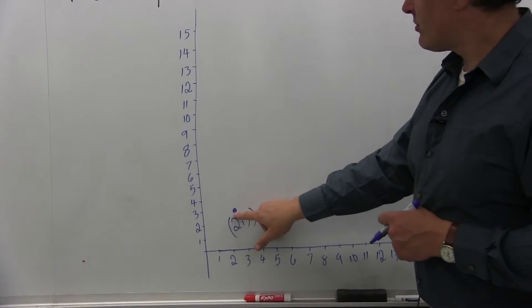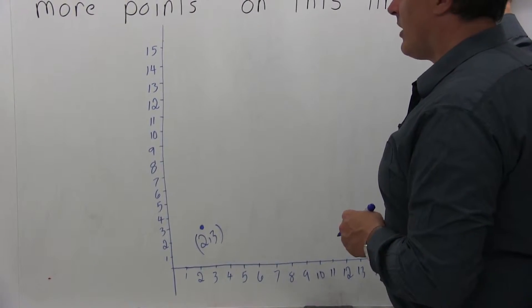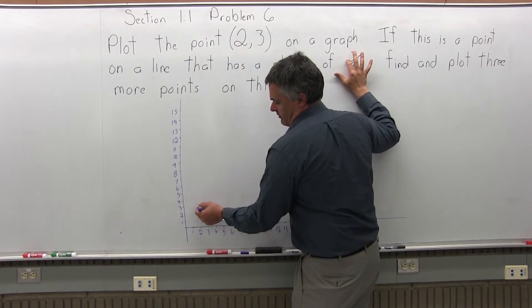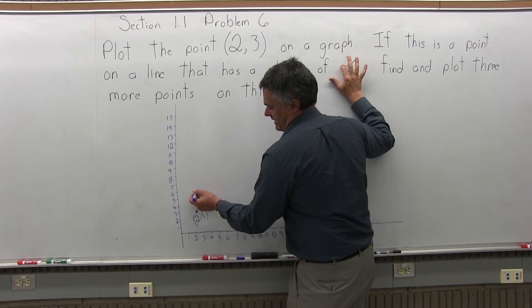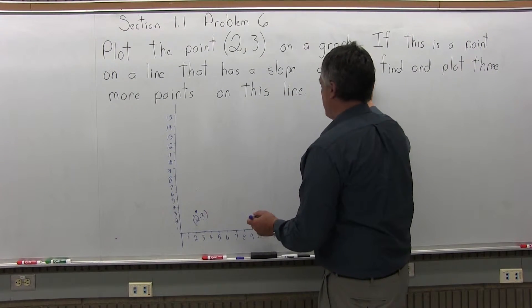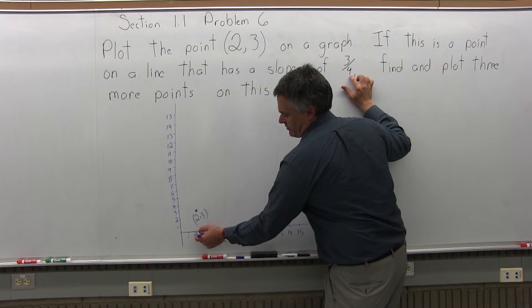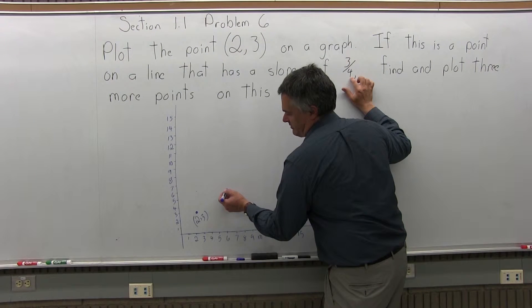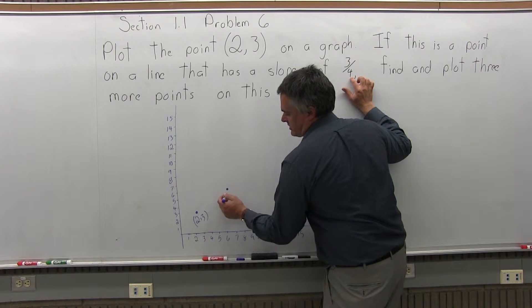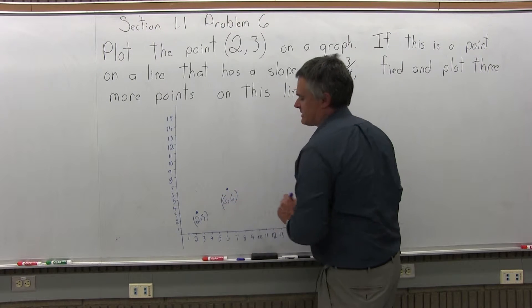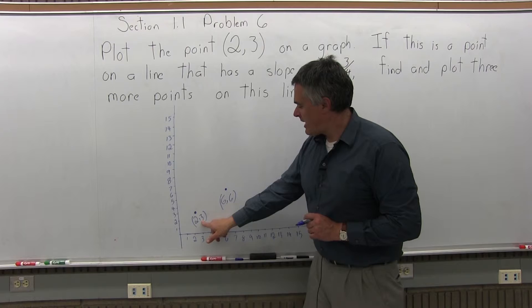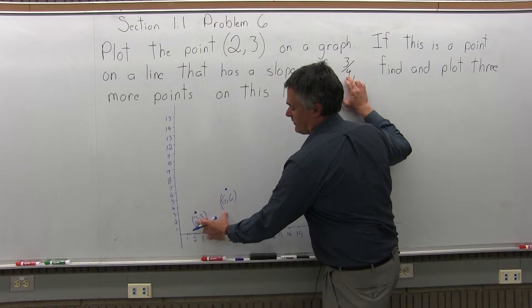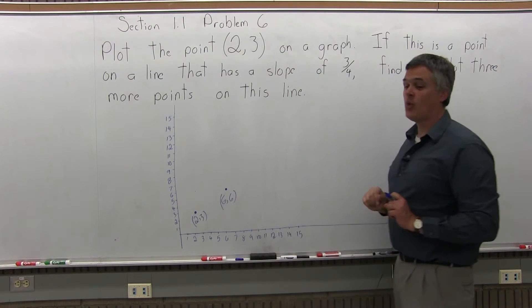Starting at (2, 3): go up 3 (the numerator of the slope), from a height of 3 up to a height of 6. Then go over 4 — we were at x = 2, so 2 plus 4 more is 6. So going over 6 and up 6 gives the next point, (6, 6). That's one of the three new points.